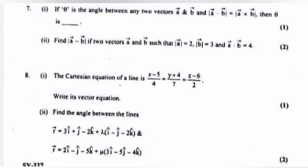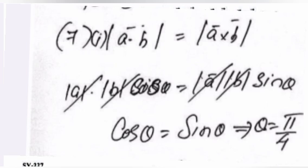If θ is the angle between any two vectors a and b, and |a · b| = |a × b|, then θ is? Answer: |a · b| = |a × b| implies cos θ = sin θ, therefore θ = π/4.